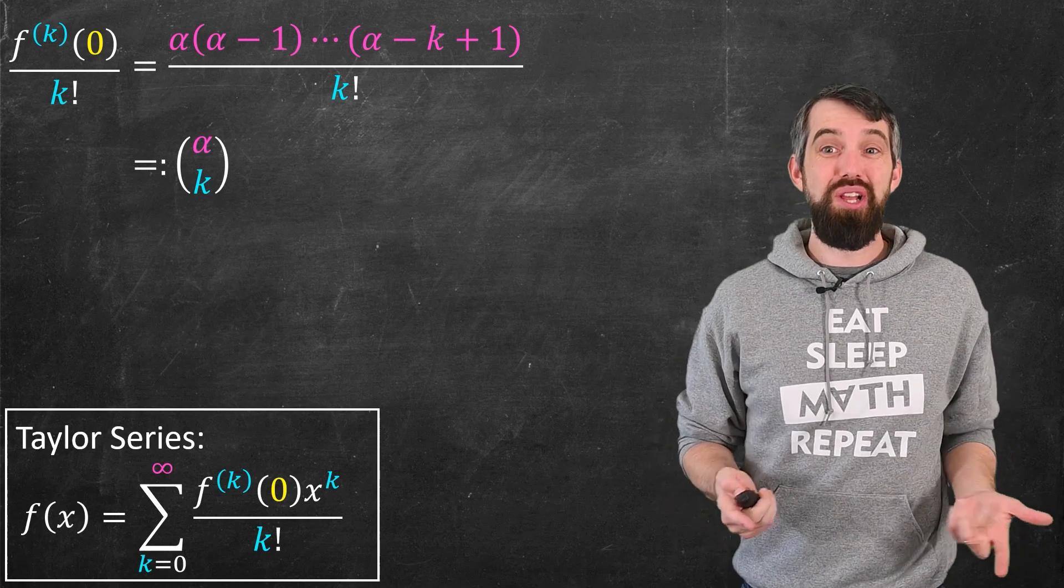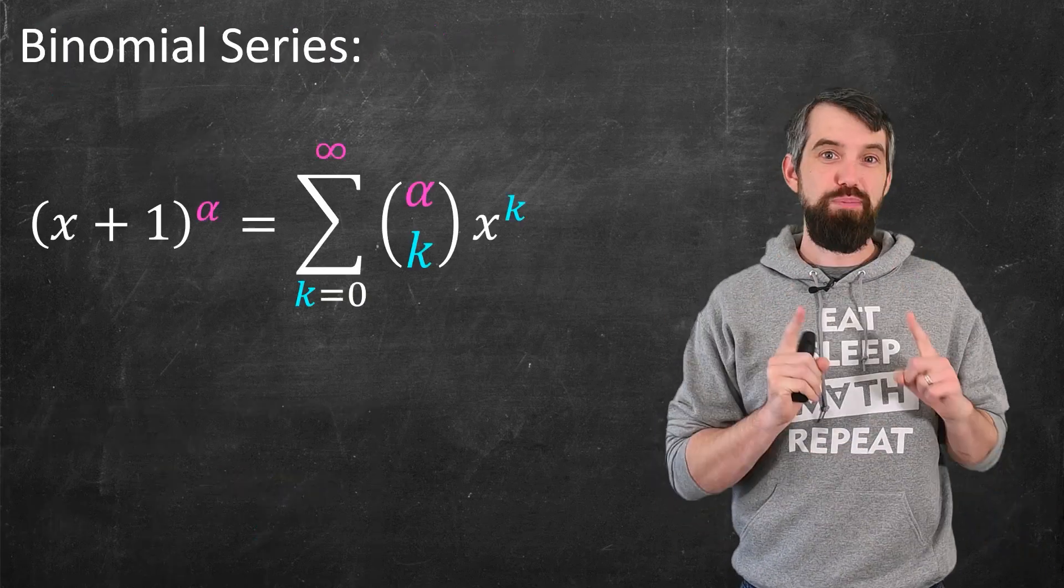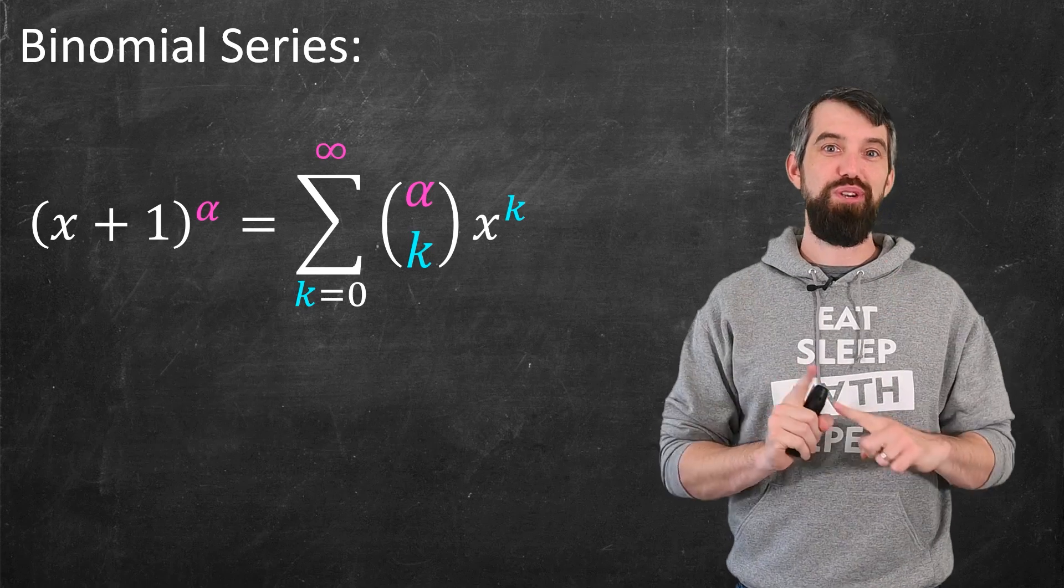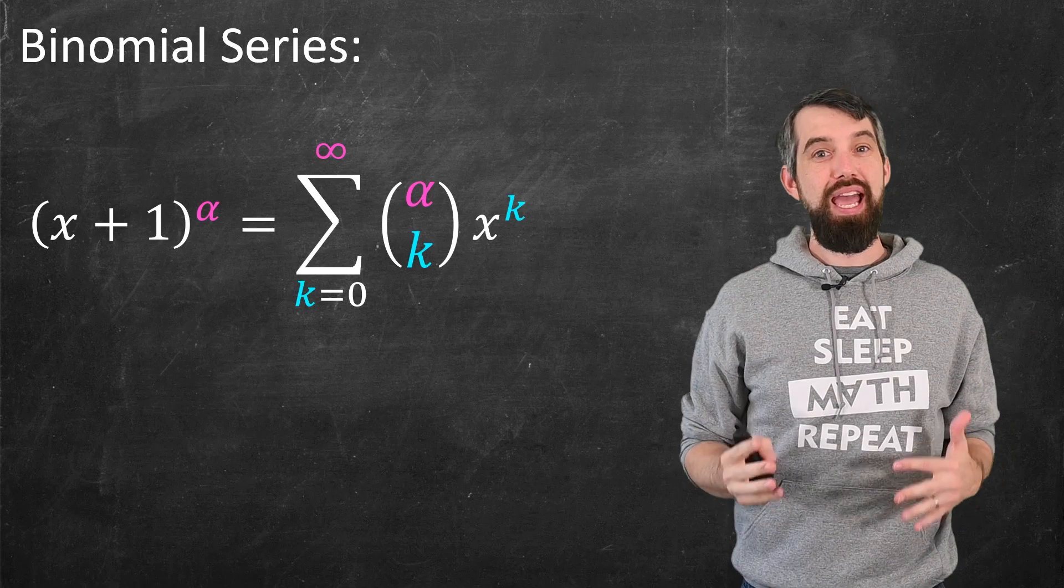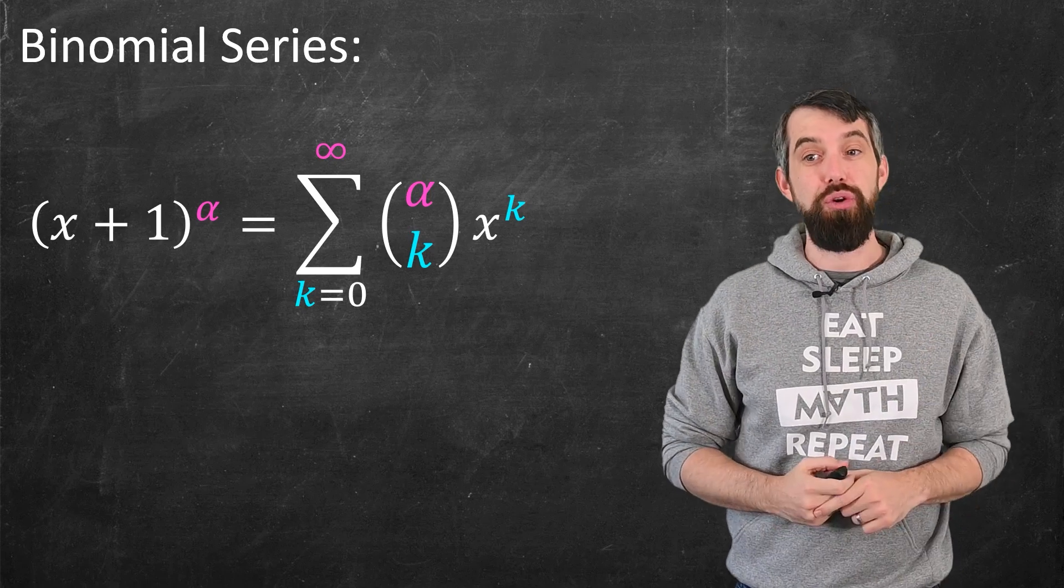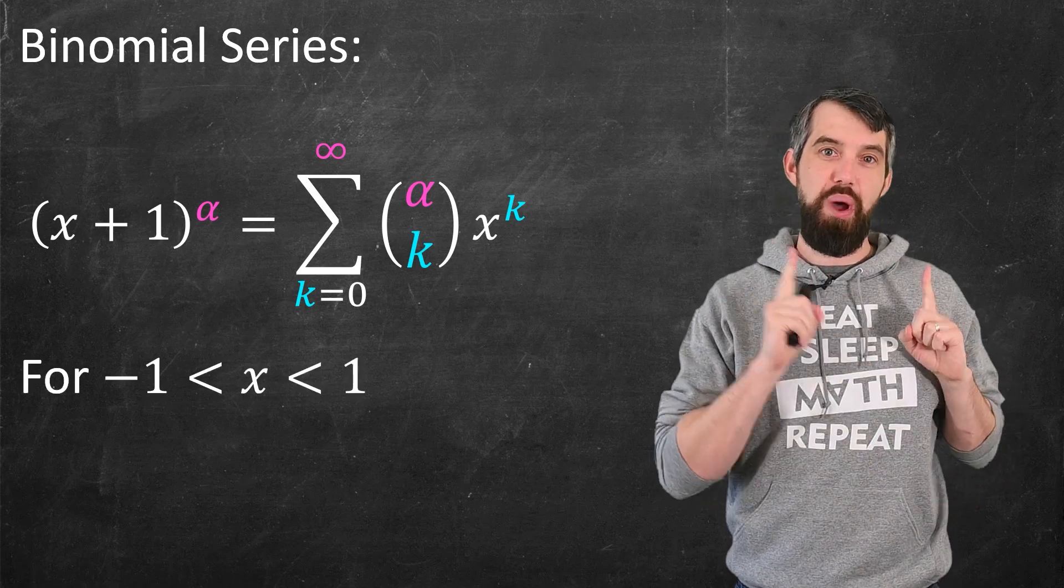So now I know what my coefficients are, and I can say what is the binomial series. x plus 1 to the alpha is the sum, from 0 all the way to infinity now, of this alpha choose k x to the k, and this is true when x is between minus 1 and 1.